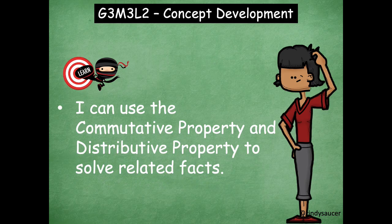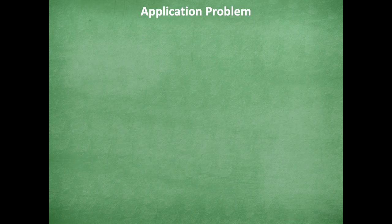Remember, the commutative property is where you can flip-flop the factors and still get the same product. And the distributive property we can use to break apart multiplication problems — break apart factors that we know to use an easier factor to help us solve one that may be a little bit harder. Okay, so let's get started.